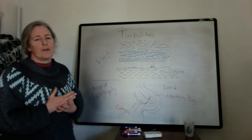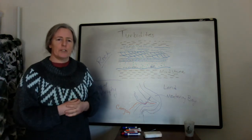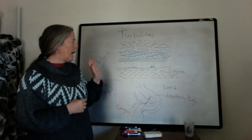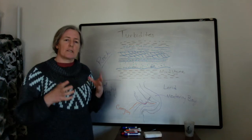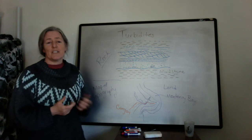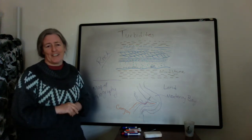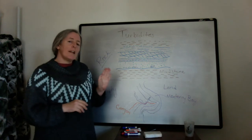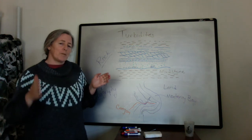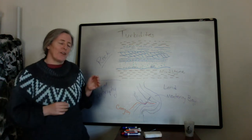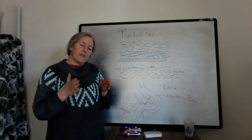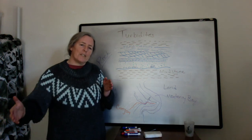In November 1929, there was a magnitude 7.2 earthquake off the coast of Newfoundland. Immediately after the earthquake hit, about six telegraph cables broke — the timing of each break is known instantly because telegraph transmission stopped. Then over the next 13 hours, more and more cables broke going south from the epicenter of the earthquake, each one in progressively deeper water.